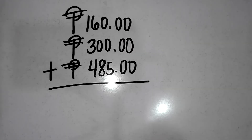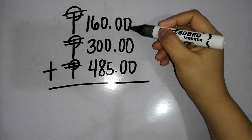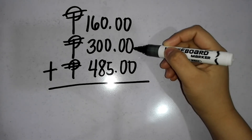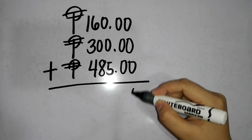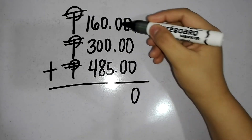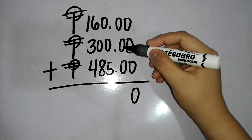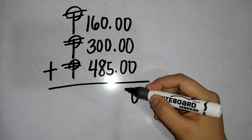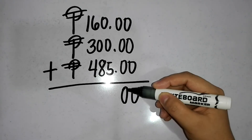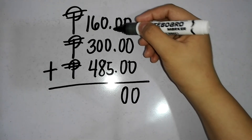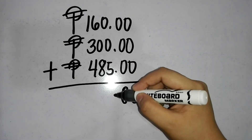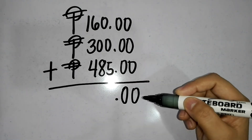For step 3, let's solve. 0 plus 0 plus 0 is equal to 0. 0 plus 0 plus 0 is equal to 0. Then, we write the decimal point.